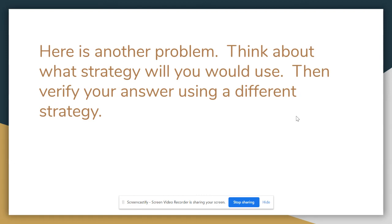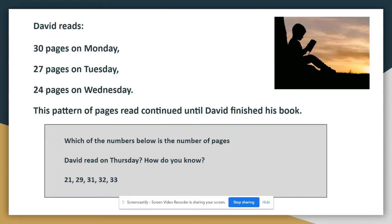Here's another problem. Think about what strategy you will use. Then verify your answer using a different strategy. Because in math, sometimes we have to verify ourselves to make sure we're on the right track. David reads 30 pages on Monday, 27 pages on Tuesday, 24 pages on Wednesday. And this pattern continues until he's finished his book. Which of the numbers below is the number of pages David read on Thursday? How do you know? So take a look at this pattern. Pick the appropriate answer. Pause the video. When you're sure, check the next page.